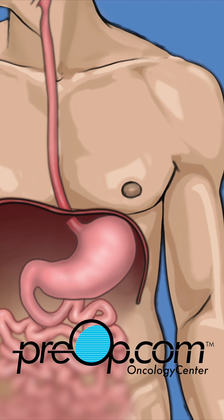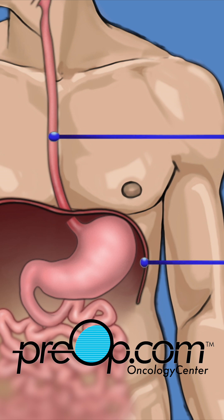The gastrointestinal tract begins with the mouth. This tract, or path for digestion, continues past the throat to the esophagus, a tube that carries food to the stomach.